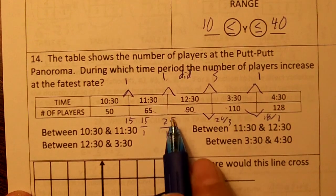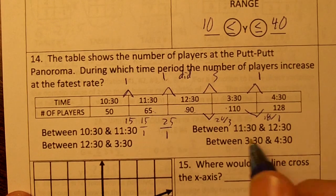The largest value is going to be 25 to 1, which is going to happen from 11:30 to 12:30.